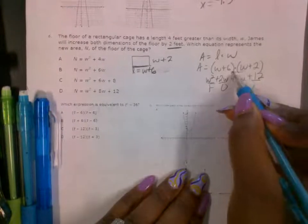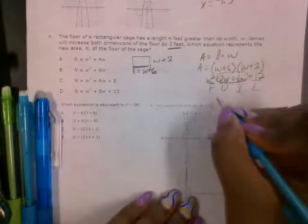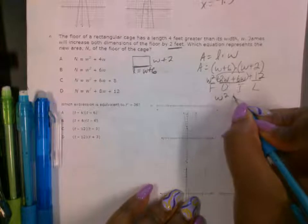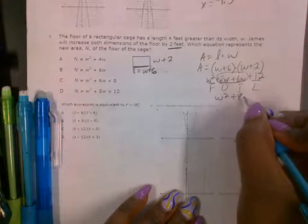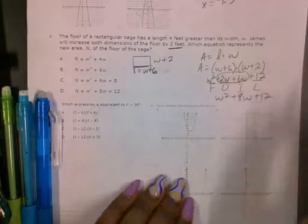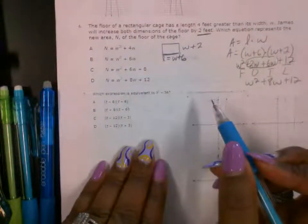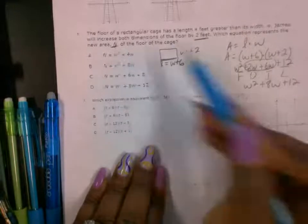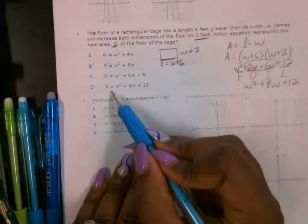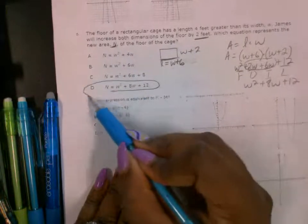Combine like terms, so that's the two terms in the middle. So this gives you W squared plus 8W plus 12. So my answer choice here is going to be, they said N represents the area, and so this is going to be D.